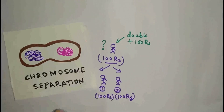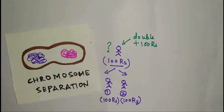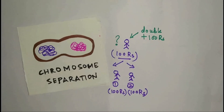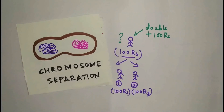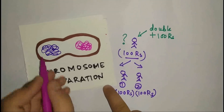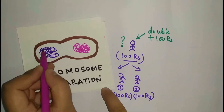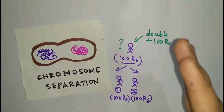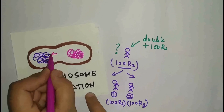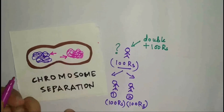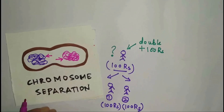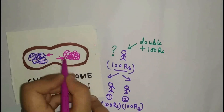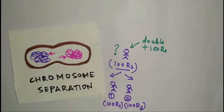Now the parent cell has its genome multiplied. The aim of the process is to produce two daughter cells. In the next step, the chromosomes start to separate — they move away towards the poles of the cell. This process is called chromosome separation, and the DNA here is the chromosome.